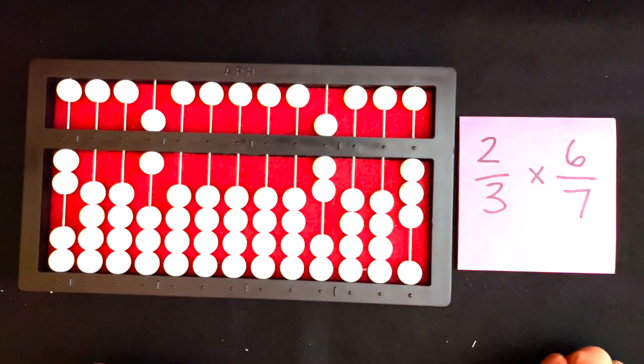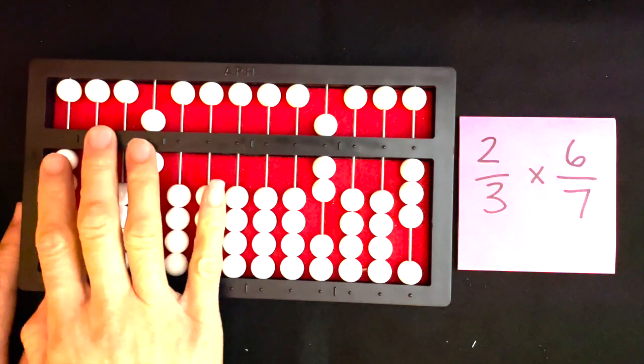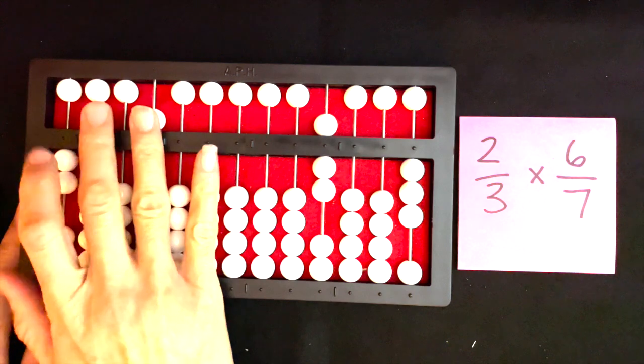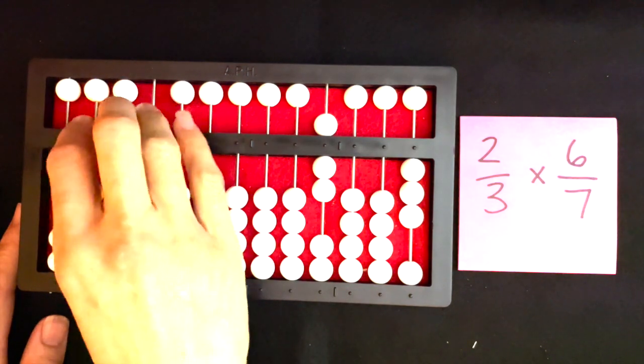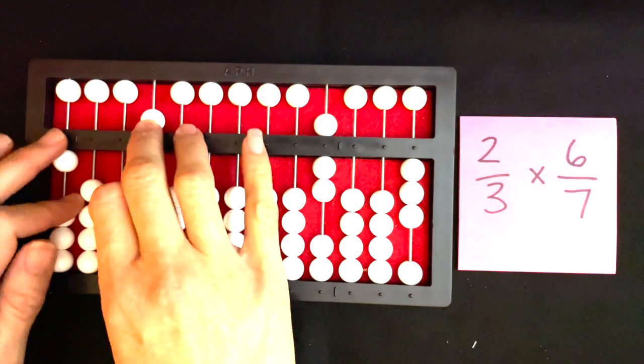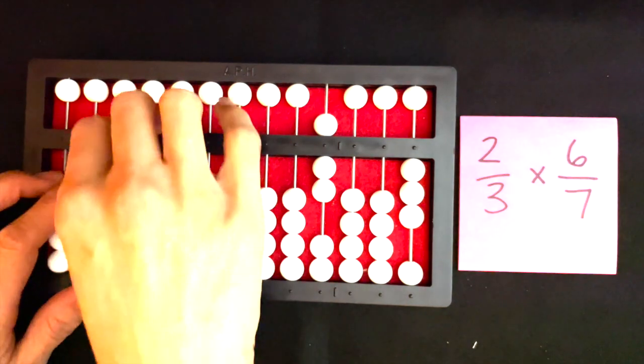Now we're going to do our multiplication. On the far left-hand side, I'm multiplying two times six. Two times six is twelve, so I'll clear my abacus and set twelve.